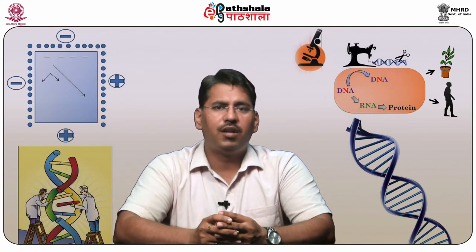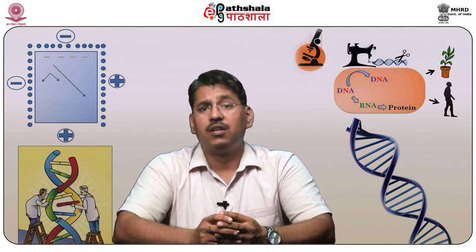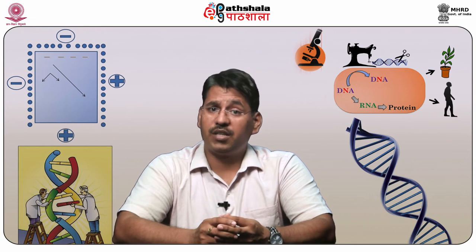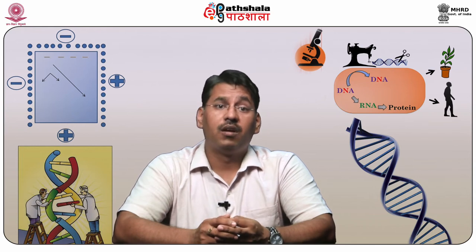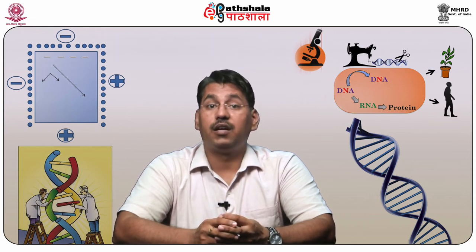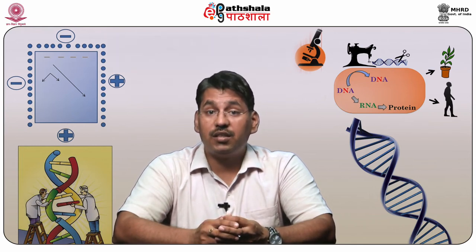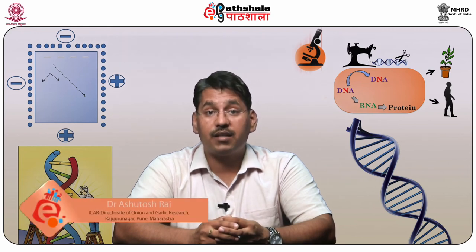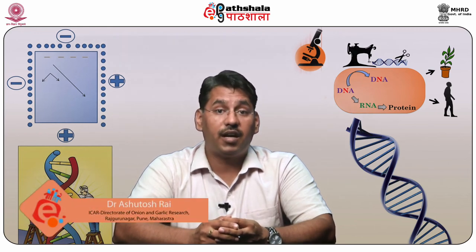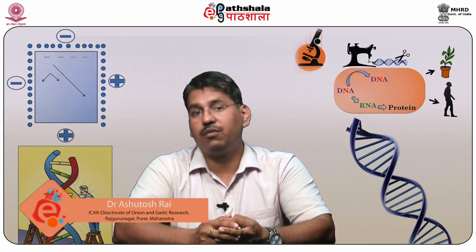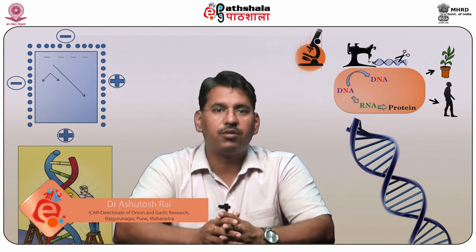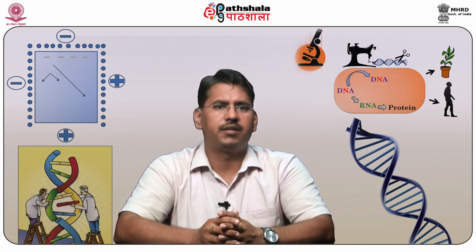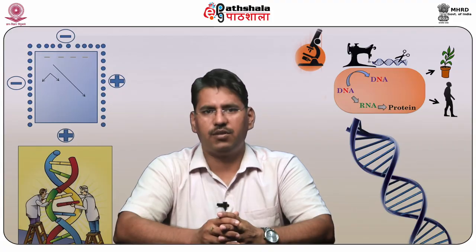In this module we learned about single-stranded bacteriophage M13, phasmid vectors, replication in these vectors, and high cloning capacity vectors like bacterial artificial chromosome vectors, yeast artificial chromosome vectors, and mammalian artificial chromosome vectors. Thank you.